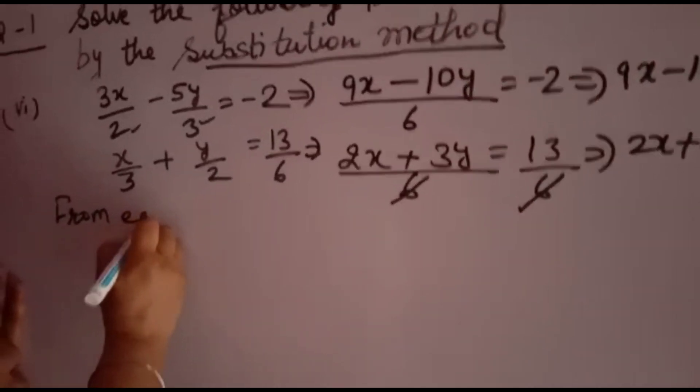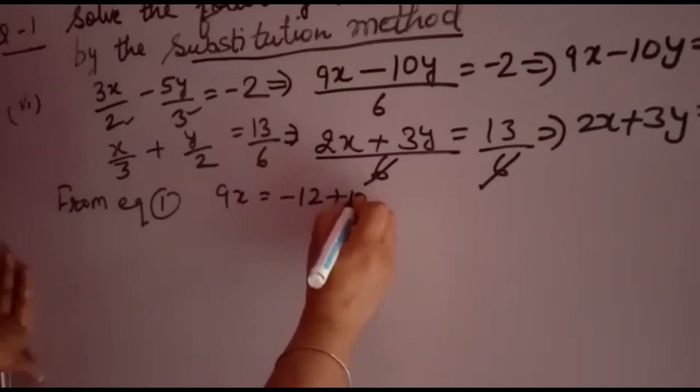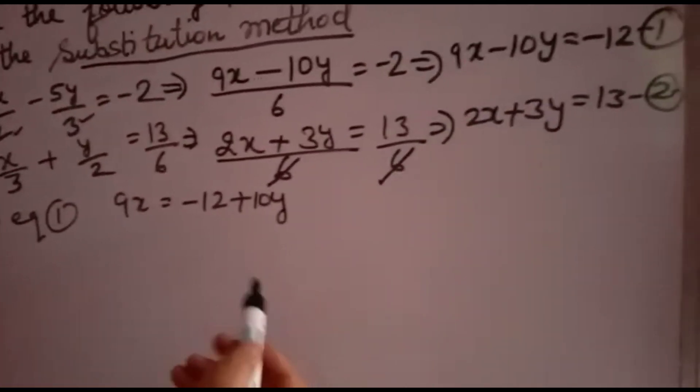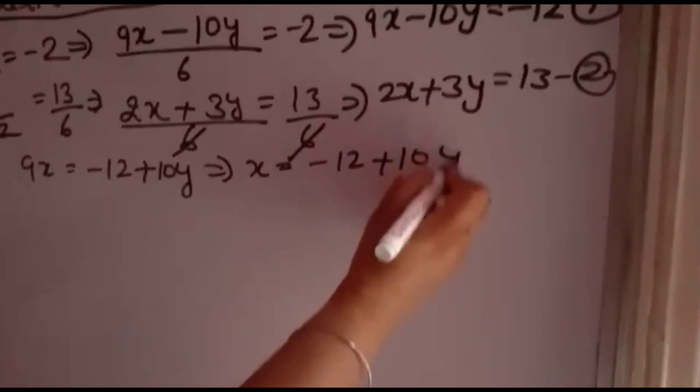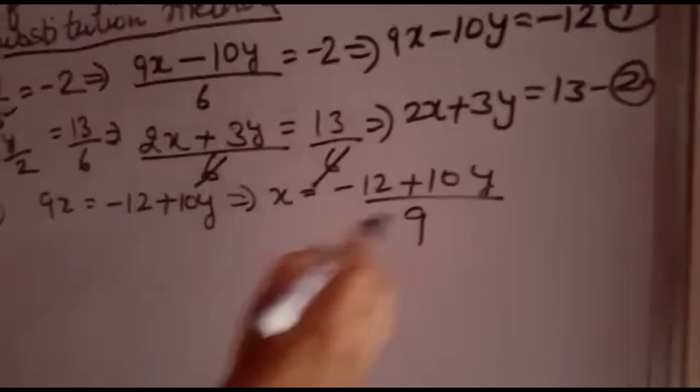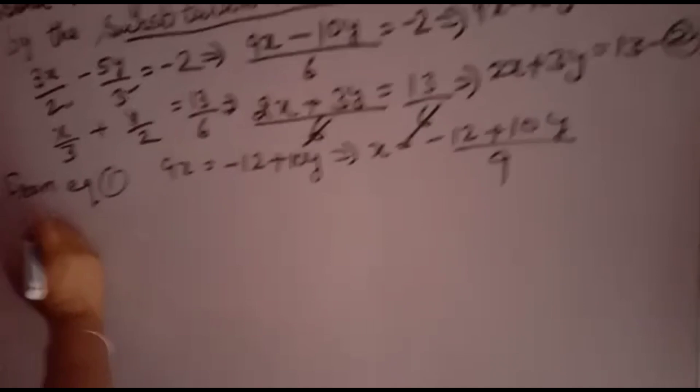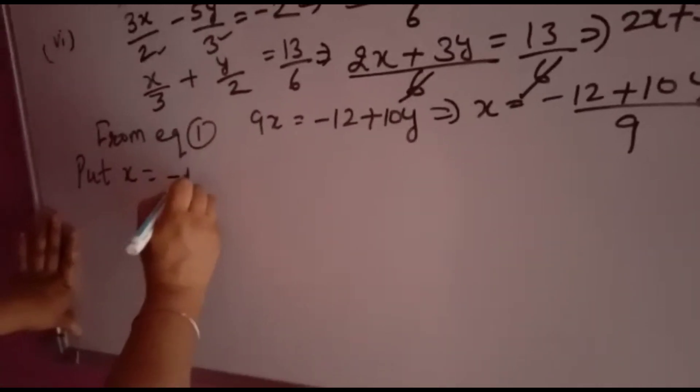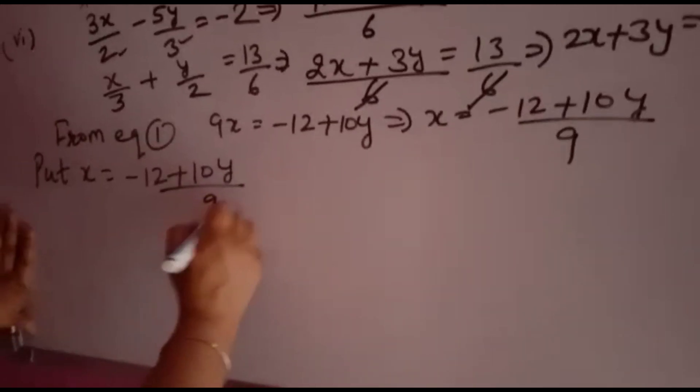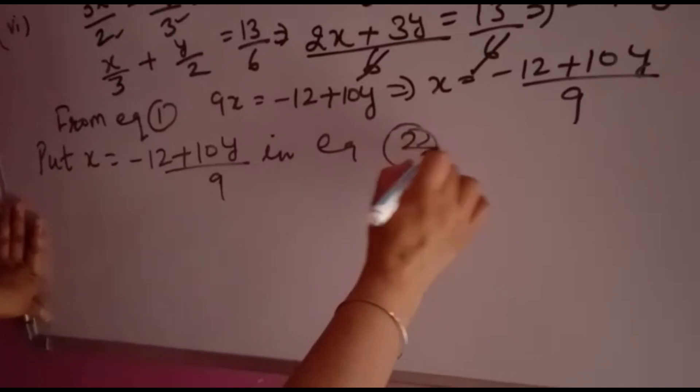Now from equation first, 9x is equal to minus 12 plus 10y. You will take 10y that side, it will become plus. That means x is equal to minus 12 plus 10y over 9. Now this x value you have to put in equation number 2. Put x is equal to minus 12 plus 10y over 9 in equation 2.